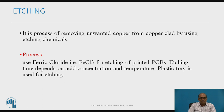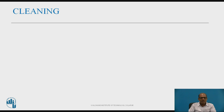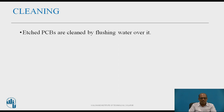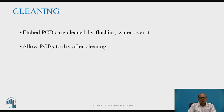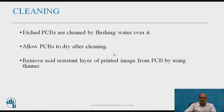After etching, the next step is cleaning. Once the PCBs are etched and unwanted copper is removed, the etched PCBs are cleaned by flushing water over them. Then allow the PCBs to dry. After drying, remove the acid-resistant layer of the printed image from the PCB by using thinner, then allow the PCBs to dry again.